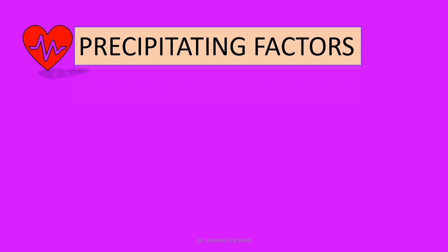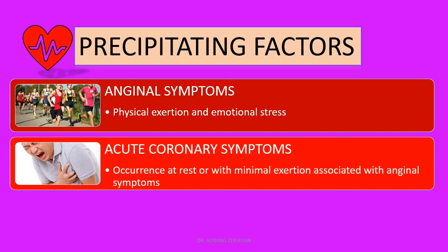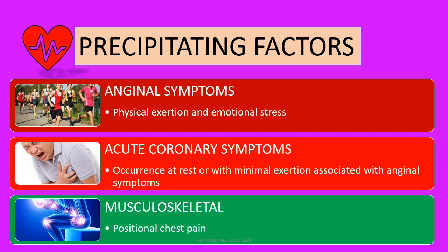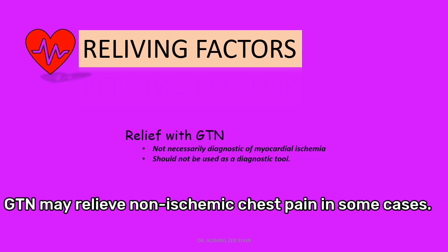Precipitating factors most likely consistent with angina are physical exertion and emotional stress. Occurrence at rest or with minimal exertion associated with anginal symptoms can indicate acute coronary syndromes — NSTEMI, unstable angina, and acute myocardial infarction. Positional chest pain is usually non-ischemic; for example, this could be musculoskeletal. Regarding relieving factors, it should be remembered that relief with nitroglycerine is not necessarily diagnostic for myocardial ischemia and should not be used as a diagnostic criterion.